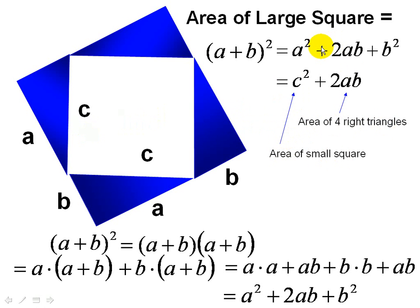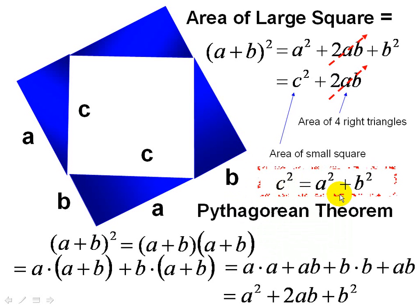We equate this equation here and this equation, and we can see that the 2AB cancels, which leads us to C squared equals A squared plus B squared, which leads to the proof of the Pythagorean theorem.